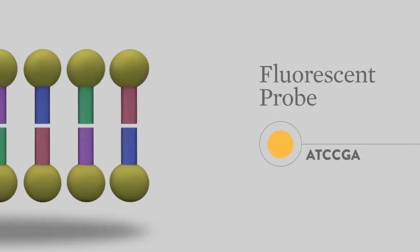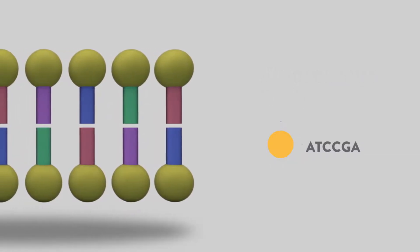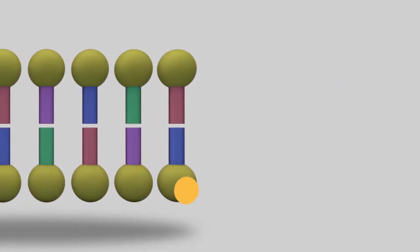The IDNow chemistry incorporates fluorescently labelled probes. A probe is a small piece of DNA that specifically identifies the target pathogen DNA which has been replicated.